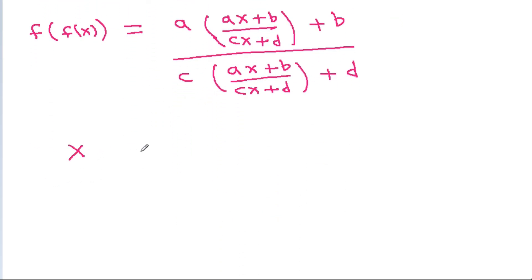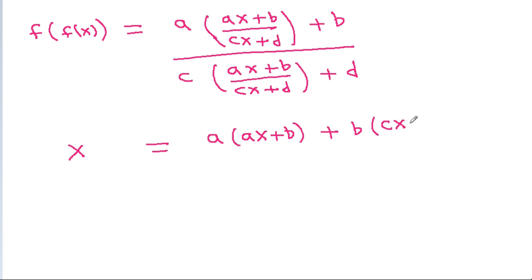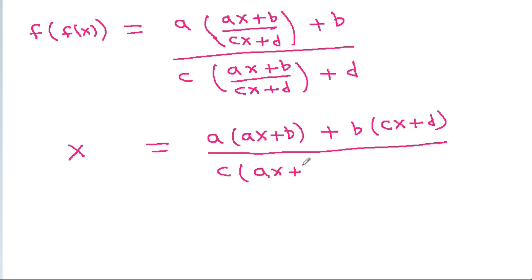That is x equals a times (ax + b) plus b times (cx + d), divided by c times (ax + b) plus d times (cx + d).